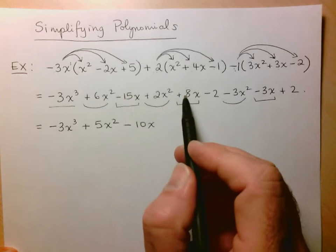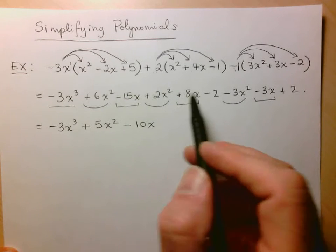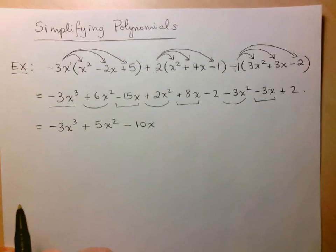So that becomes minus 10x. So again, negative 15 plus 8, negative 7. Negative 7 minus 3, negative 10.